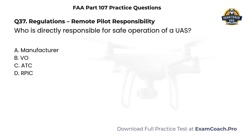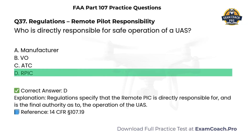Regulations — Remote Pilot Responsibility. Who is directly responsible for safe operation of a UAS? A. Manufacturer. B. Visual observer. C. Air traffic control. D. Remote pilot in command. Correct answer: D. Remote pilot in command. Regulations specify that the remote PIC is directly responsible for, and is the final authority as to, the operation of the UAS.